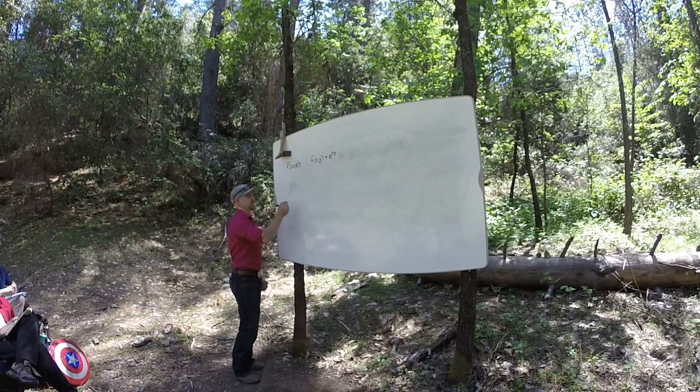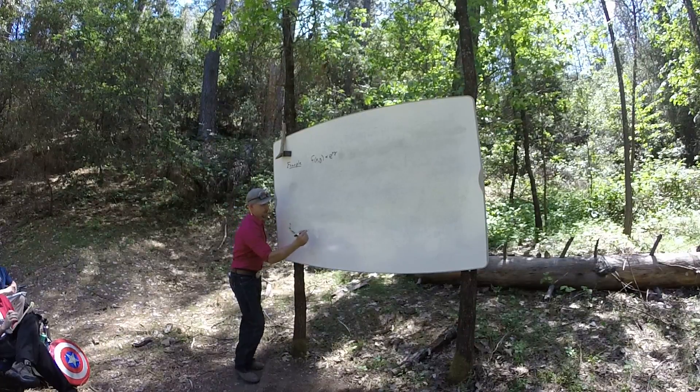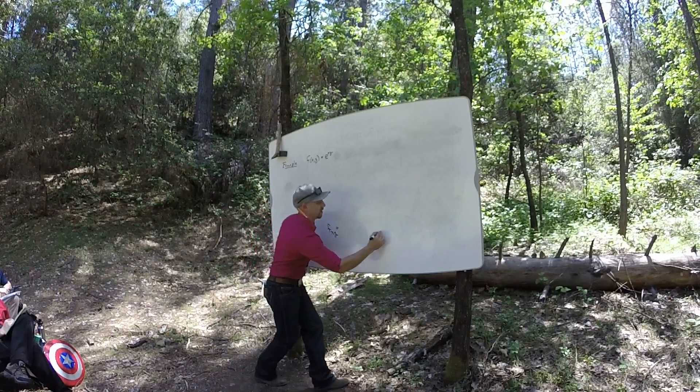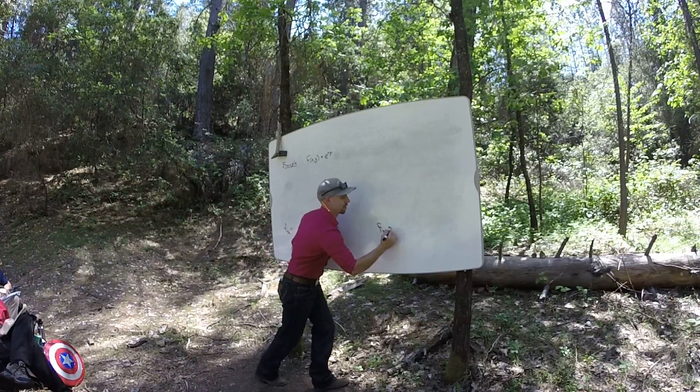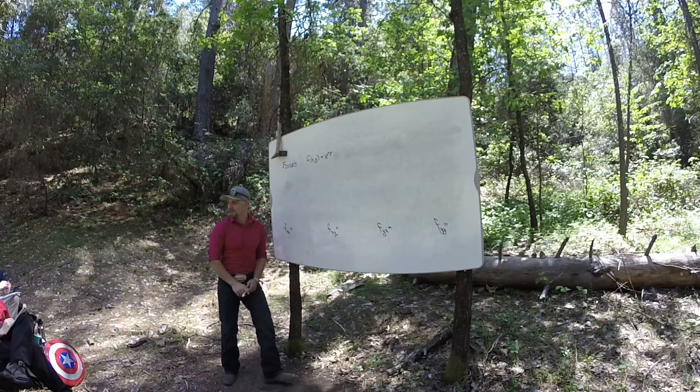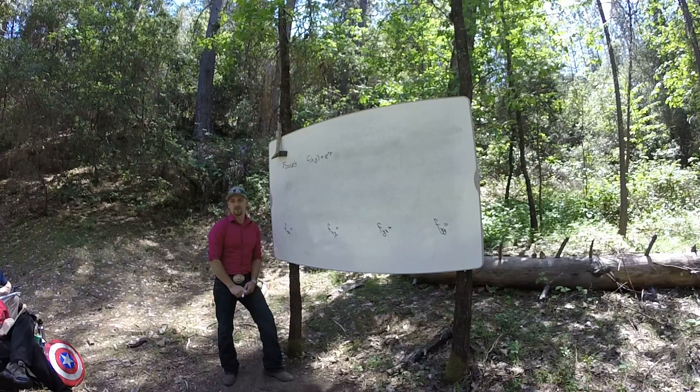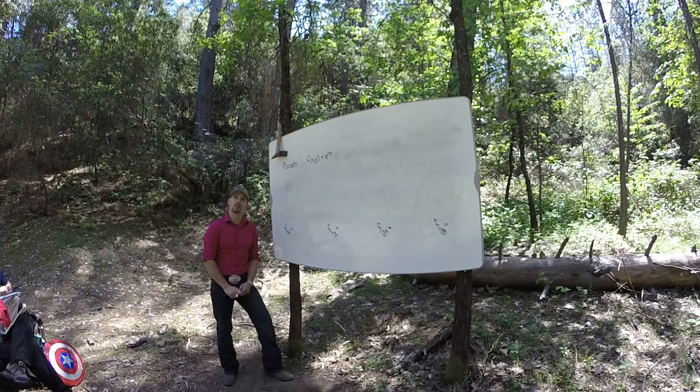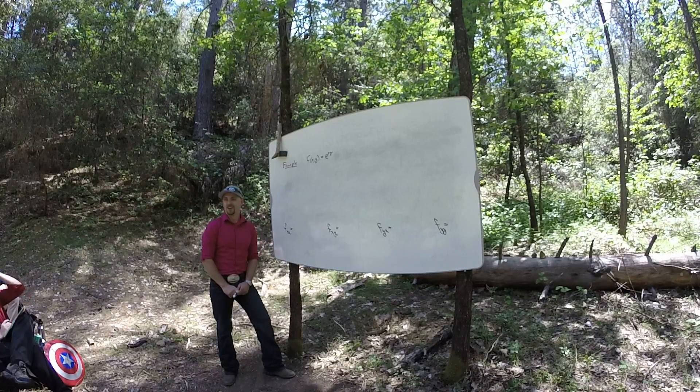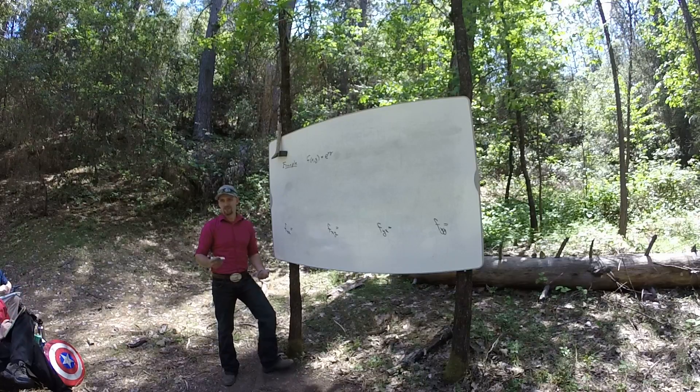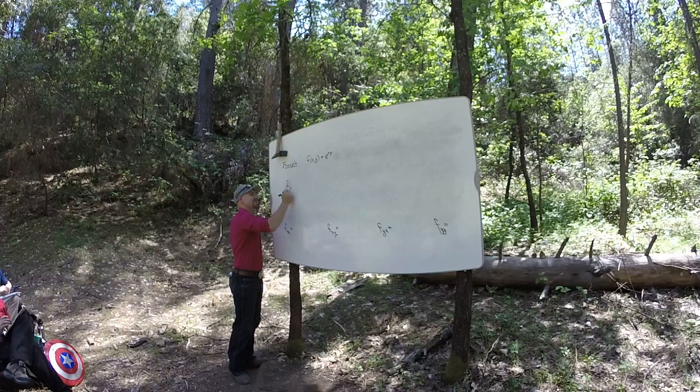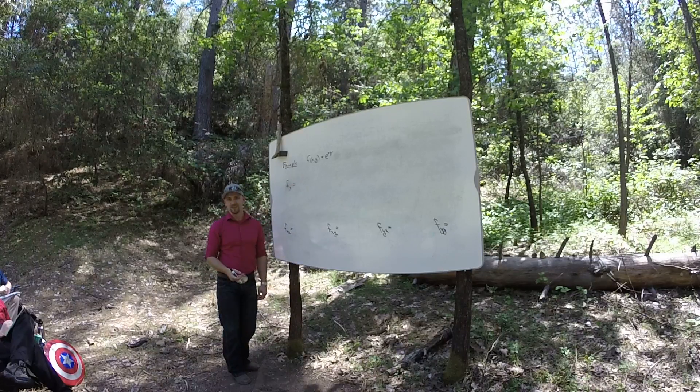To calculate partials, what do you start with? One of the partials. Yeah, I mean, I want to get fxx, fxy, fyx, and fyy, right? So what do you start with? fxx. Yeah, well, let's start with just the first order partials, right?